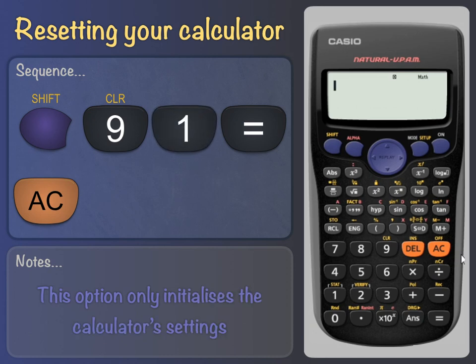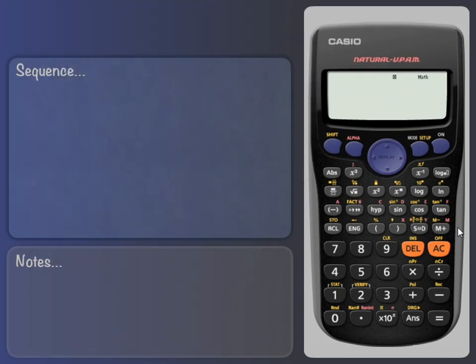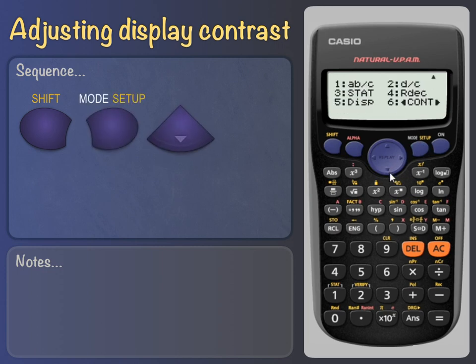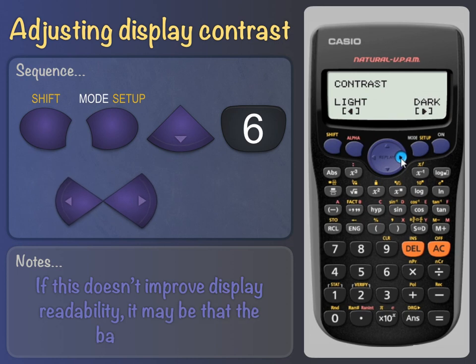Next up, adjusting the display contrast. To do this, we press Shift Setup Down 6, then left or right to adjust the contrast. When you set the contrast just as you want it, press AC.